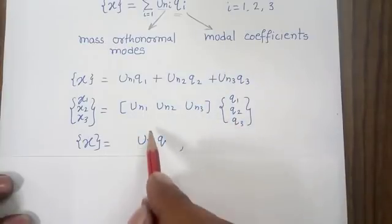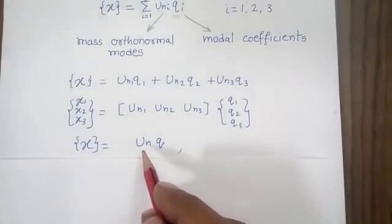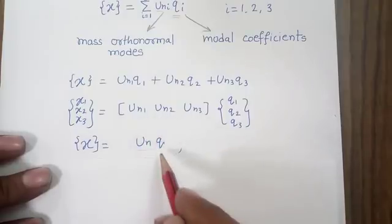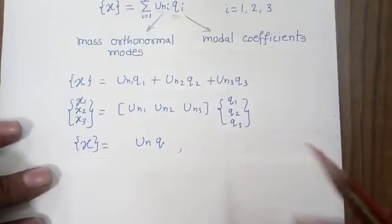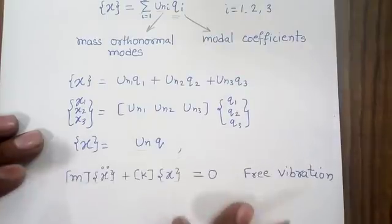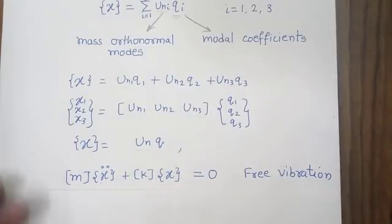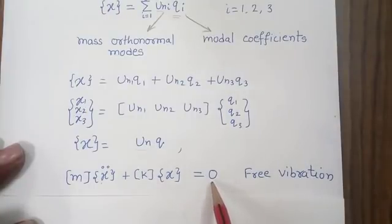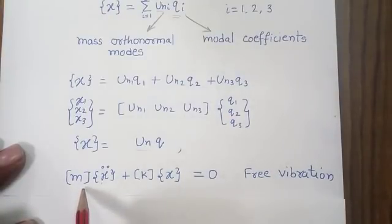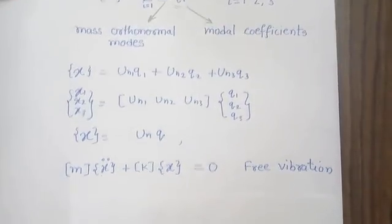For simplicity, I am using U for the orthonormal modes and Q for the vector of modal coefficients Q1, Q2, and Q3. When I substitute this general solution into the governing equation — mass matrix times acceleration vector plus stiffness matrix times displacement vector equals zero — this represents an undamped freely vibrating system.